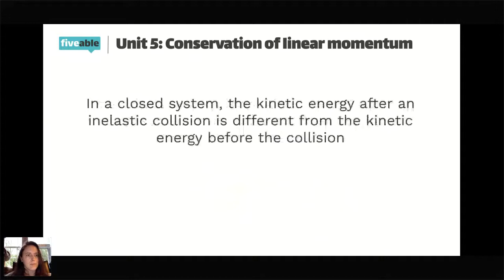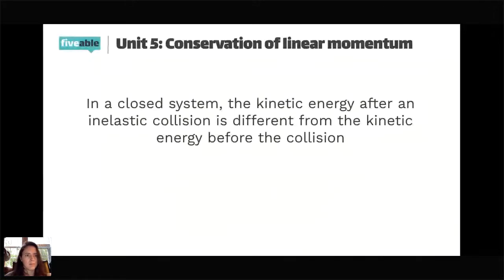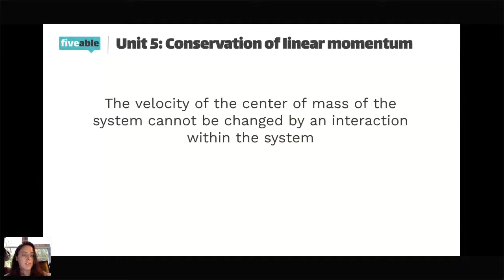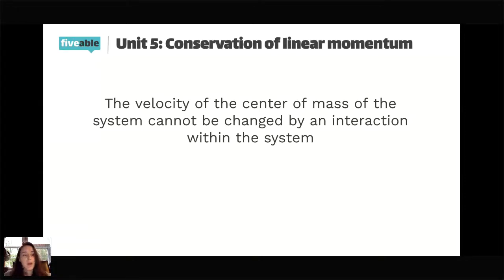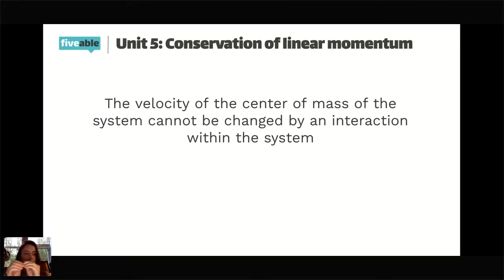In a closed system, the kinetic energy of an inelastic collision is different from before the collision. The velocity of the center of mass of the system cannot be changed by an interaction within the system. This is another conceptual point for collisions: the center of mass of the two colliding objects is always going to be going at the same velocity. There's no way to change that without some external interaction.